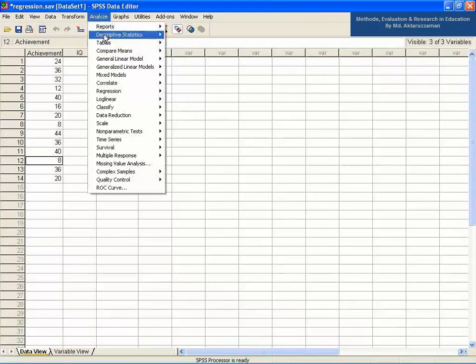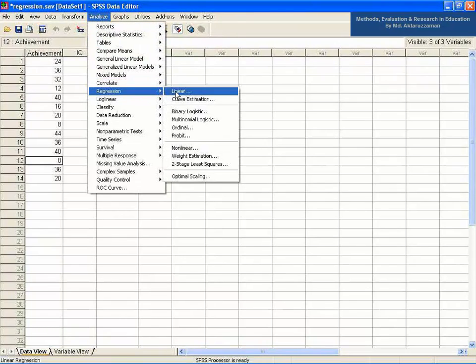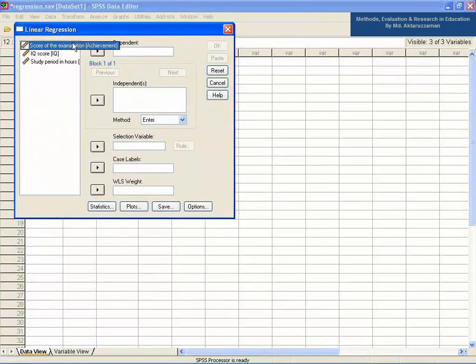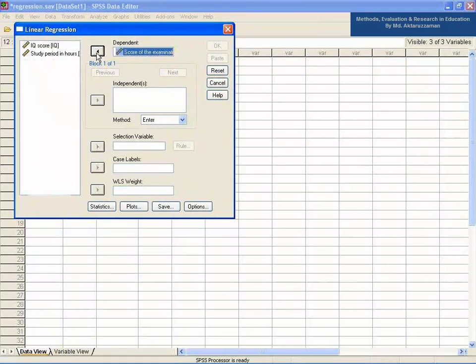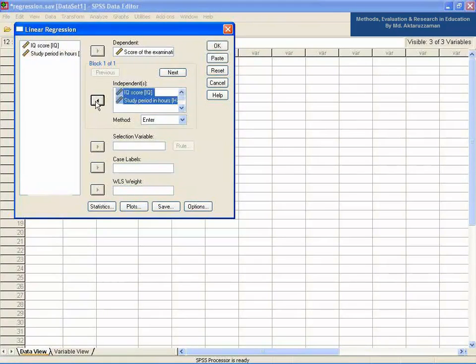Now, go to the Analyze menu, then Regression, then Linear. Take the score of the examination in the dependent field, and IQ score and study period in hours in the independent field.